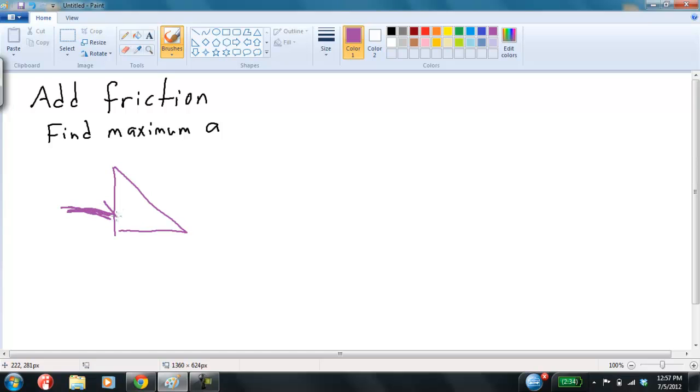So we're looking for the maximum and the minimum. So let's just look for the maximum. Okay. So if we're looking for the maximum acceleration, the friction. So the block's going really fast. And we're trying to push it really hard. And without friction, the block would fly off the top.